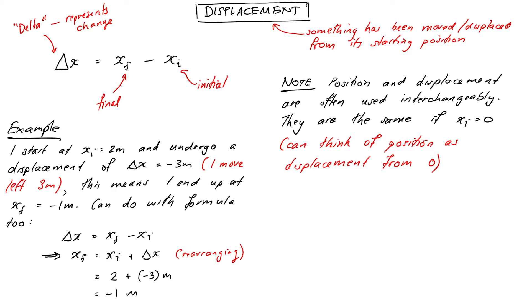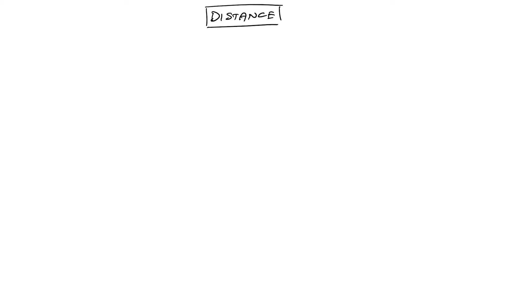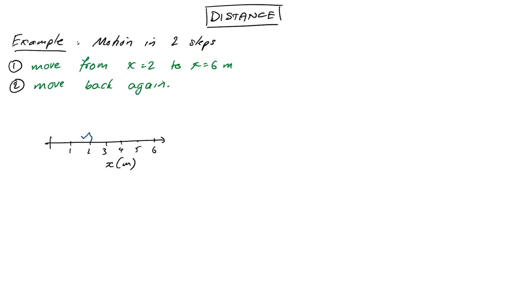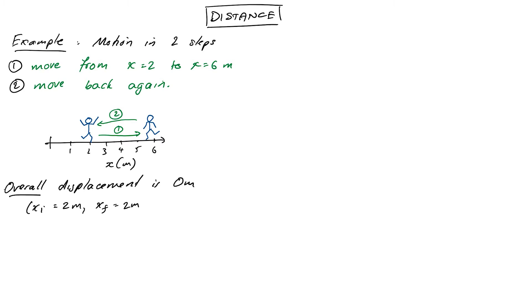The thing that is fundamentally different is distance. Take this example motion: I start at 2 meters, move to 6 meters, and then move back again. My starting position was 2 and my ending position is 2, so my displacement delta x = 2 minus 2 = 0 meters. I've ended up exactly where I started, so my overall displacement is 0.